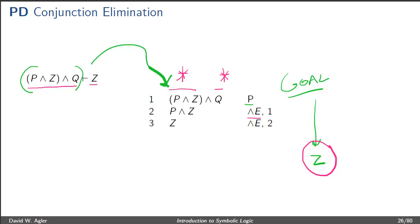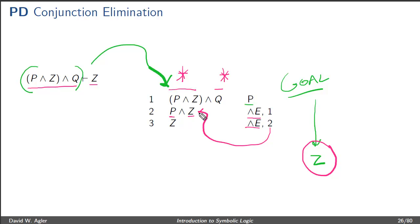Remember that the goal of this proof is to derive Z, and since we have P and Z at line two, conjunction elimination says we can derive either one of the conjuncts from that conjunction. We simply write Z at line three, using conjunction elimination again — this time using the second formula where P is on the left-hand side and Z is on the right-hand side — and so we use conjunction elimination to derive Z.